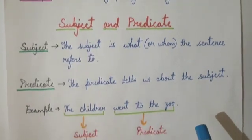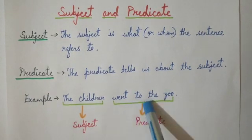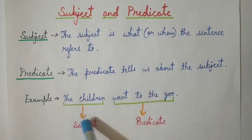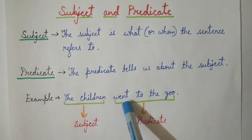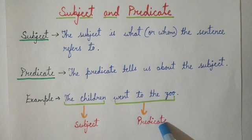For example, the children went to the zoo. In this sentence, 'the children' is the subject and 'went to the zoo' is the predicate.